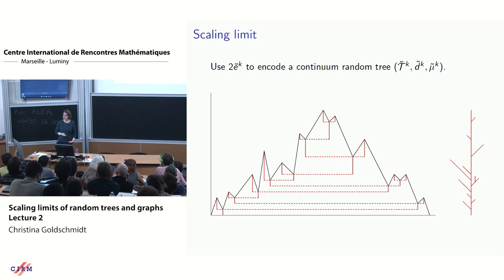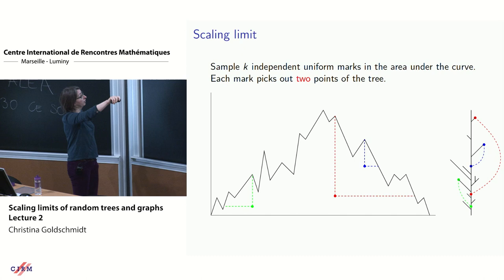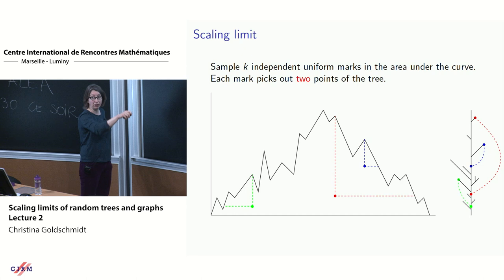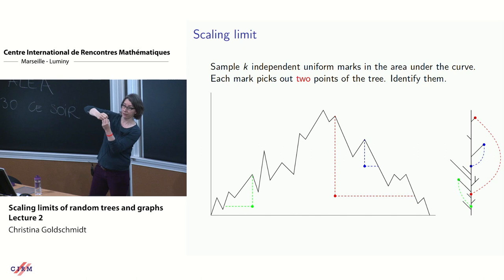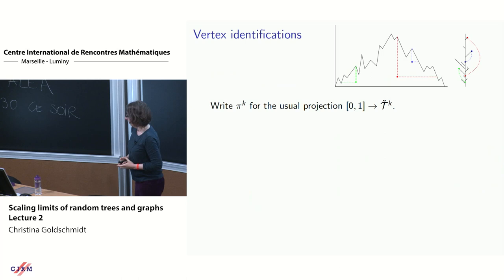Using the convention that trees are encoded by twice the excursion function, let T̃_k be the continuum random tree encoded by 2ẽ_k. Then we sample k independent uniform marks in the area under the excursion — for example with k = 3, three points uniform in the area under the curve. Each mark picks out two points in the tree: one at top of the excursion and one partway down, and we glue them together, identifying those pairs of points — creating k cycles in the resulting object.